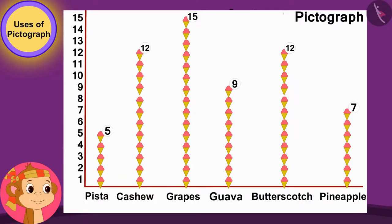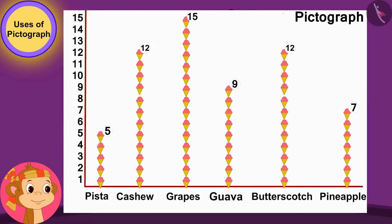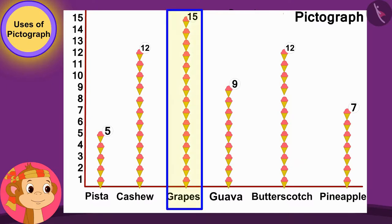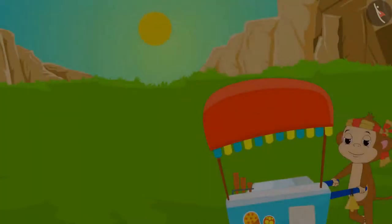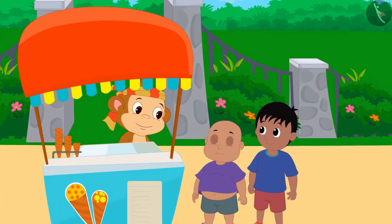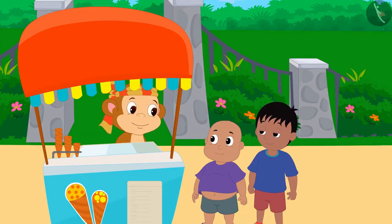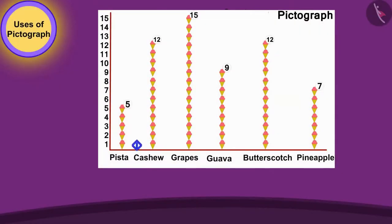Babban has decided with the help of the pictograph that he will also start selling grape ice cream from the next day. Babban sold grape ice cream at his stall the next day and everyone liked it very much. In this video, we saw some interesting examples related to the pictograph.